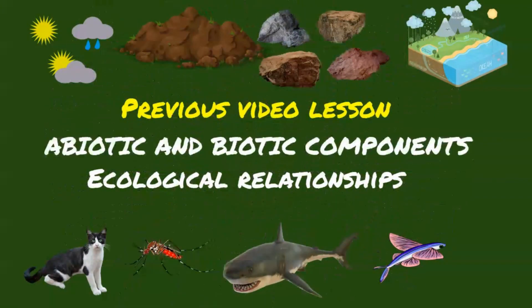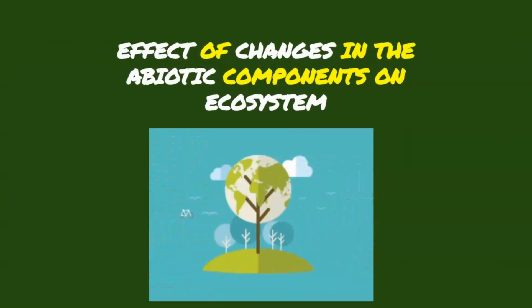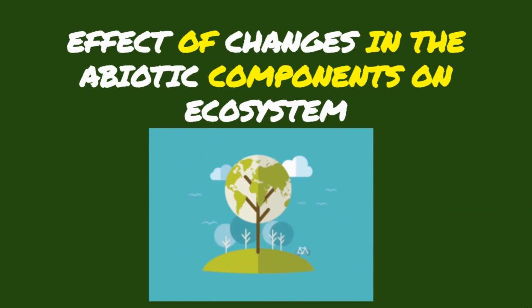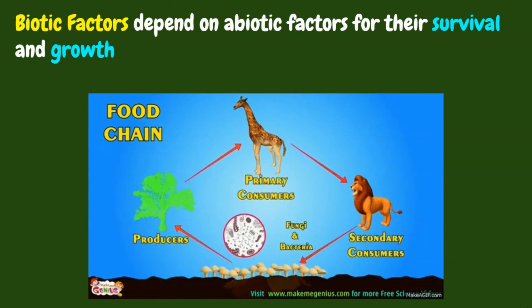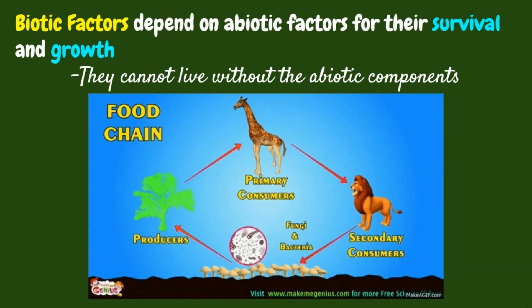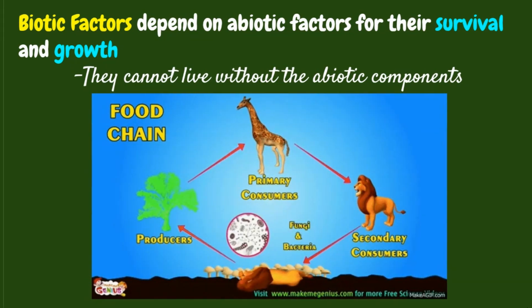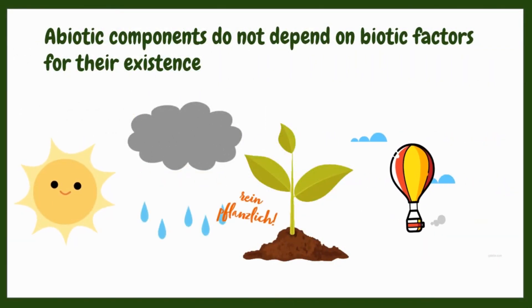Hi, learners! In our previous video lesson, we learned about the abiotic and biotic components in an ecosystem, as well as the different ecological relationships. In this video lesson, we will be discussing the effect of changes in the abiotic factors on an ecosystem. Biotic components depend on abiotic factors for their survival and growth, meaning biotic components cannot live without abiotic components. On the other hand, abiotic components do not depend on biotic factors for their existence.